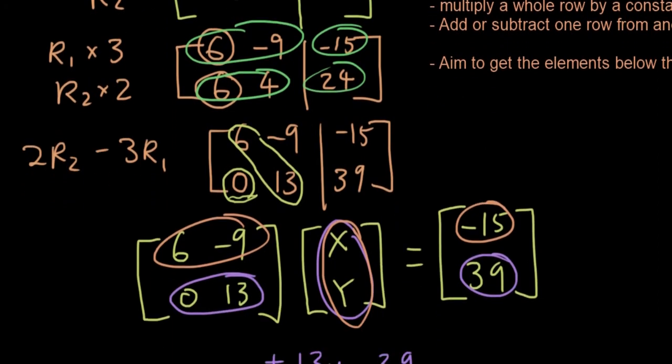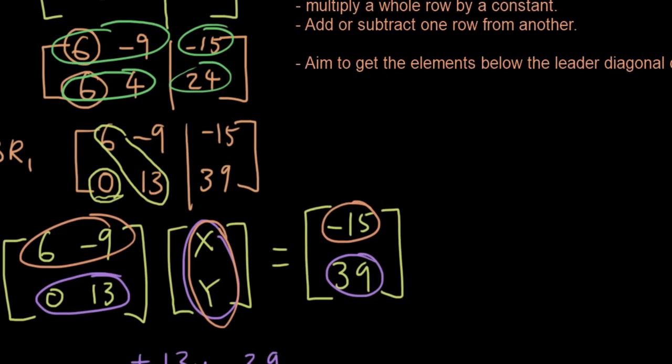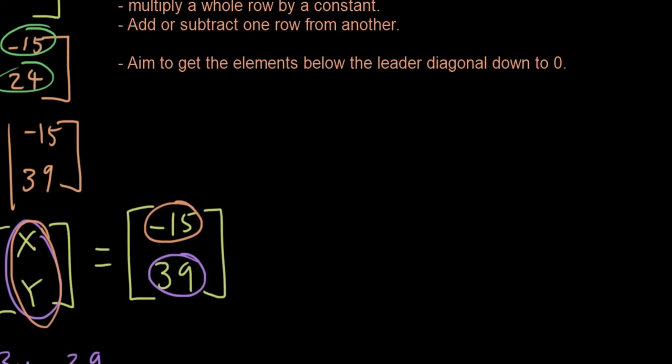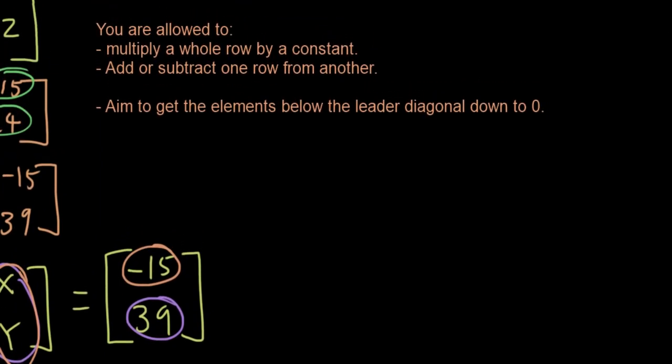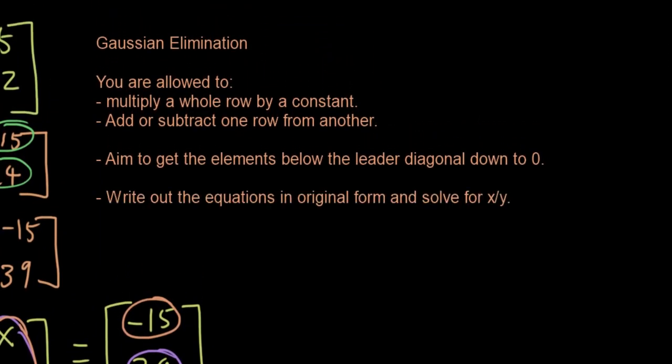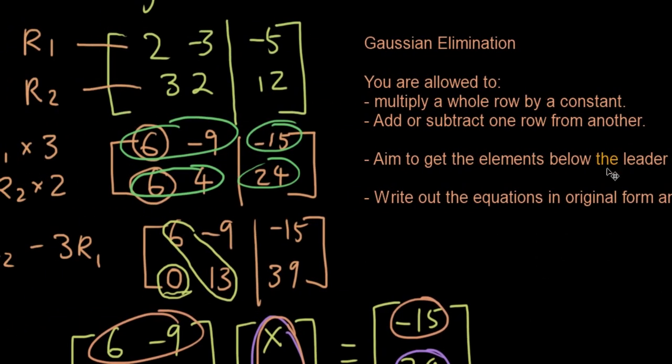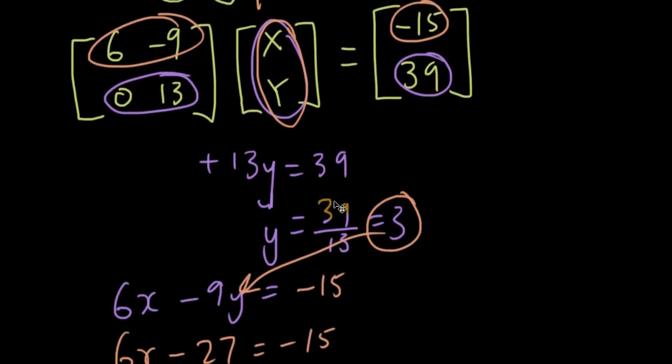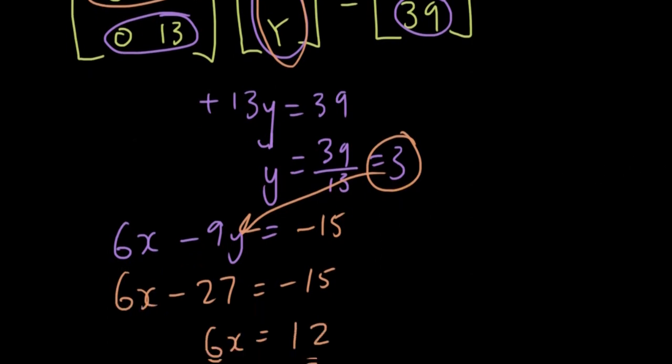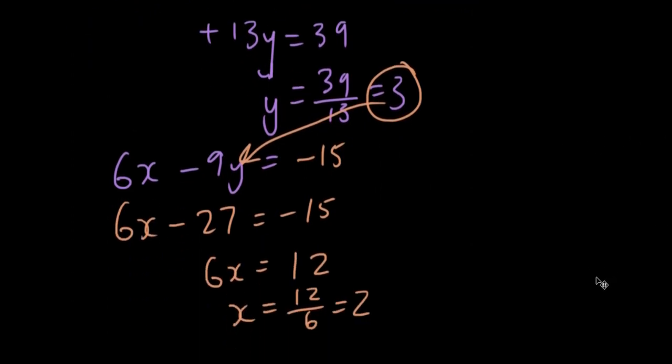And then once you have done that, we can write out the equations and solve it. So once you have done that, you can write out the equations in original form and solve for x and y. Because we already have a 0, when you write it out again, you would start from the bottom. So 0x plus 13y is 39, and then you would know what y is straight away and then solve from that information. Thanks for watching guys, see you next time.